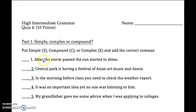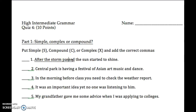So let's look at the first sentence: 'After the storm passed, the sun started to shine.' 'After the storm passed' is going to be a dependent clause — it starts with one of those subordinating conjunctions, and then we have a subject and a verb. Remember, even in a dependent clause, you need a subject and a verb. Then we have our independent clause second. So the rule is: if your dependent clause comes first, you have to add a comma.